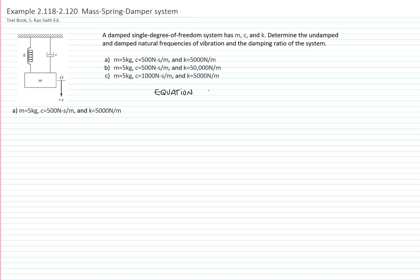I like to write first the equation of motion of the system, which we already have done during the review of the theory, which is mass times acceleration plus the constant of the damper times the velocity plus the constant of the spring times the displacement, and that equals zero.